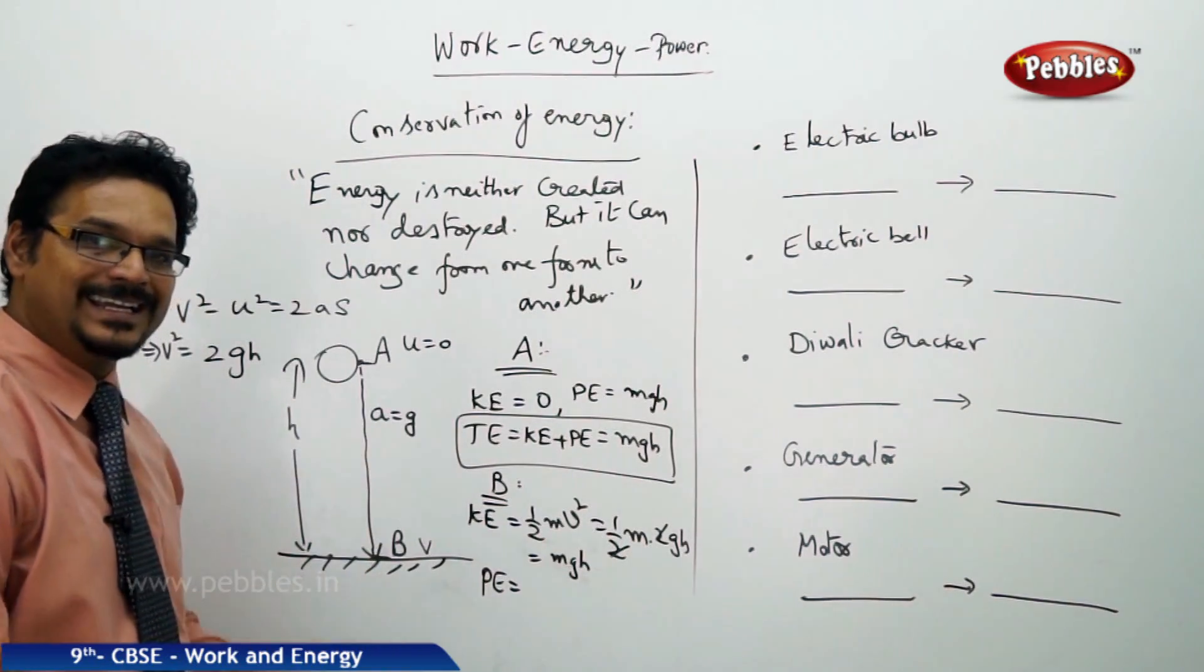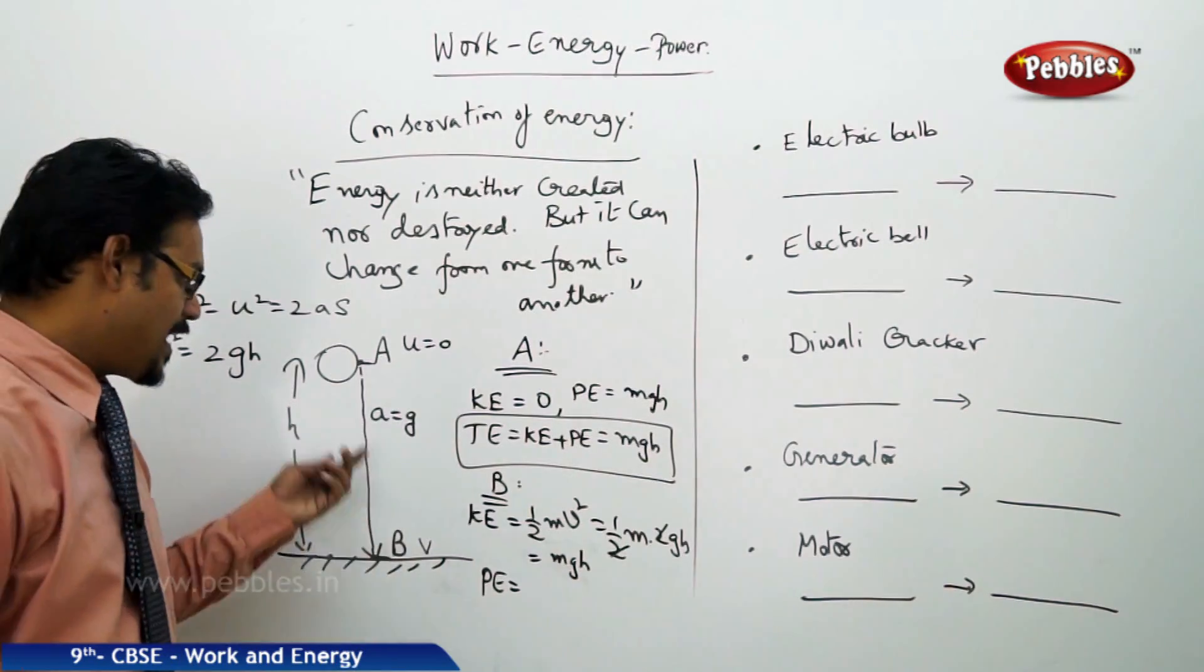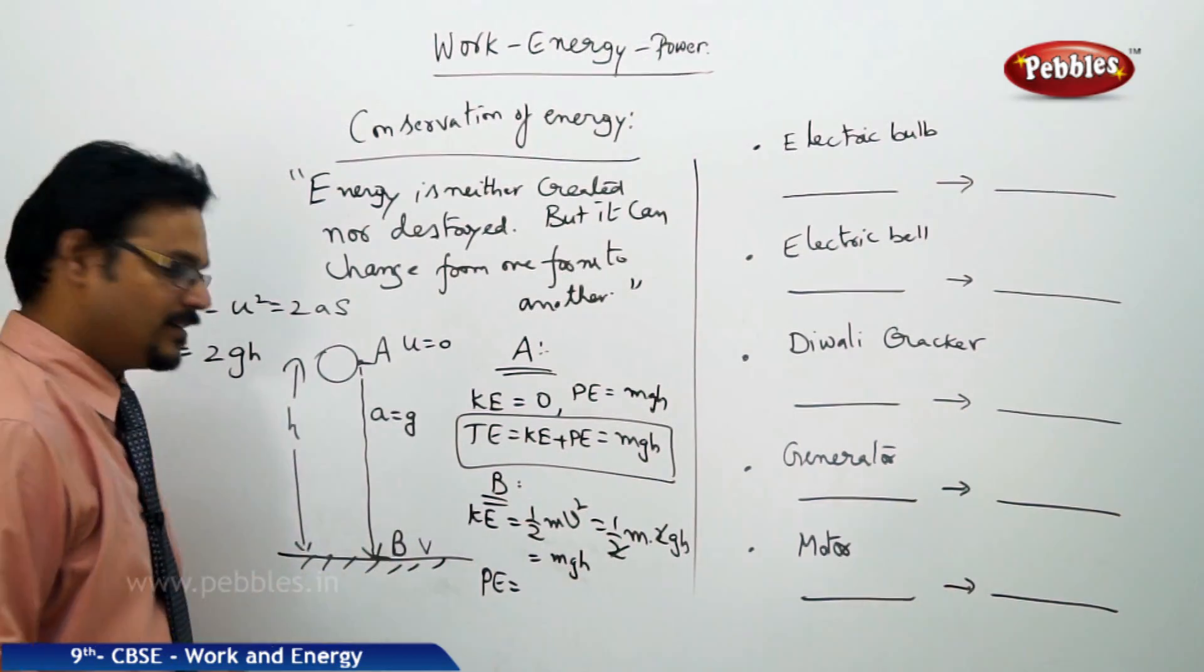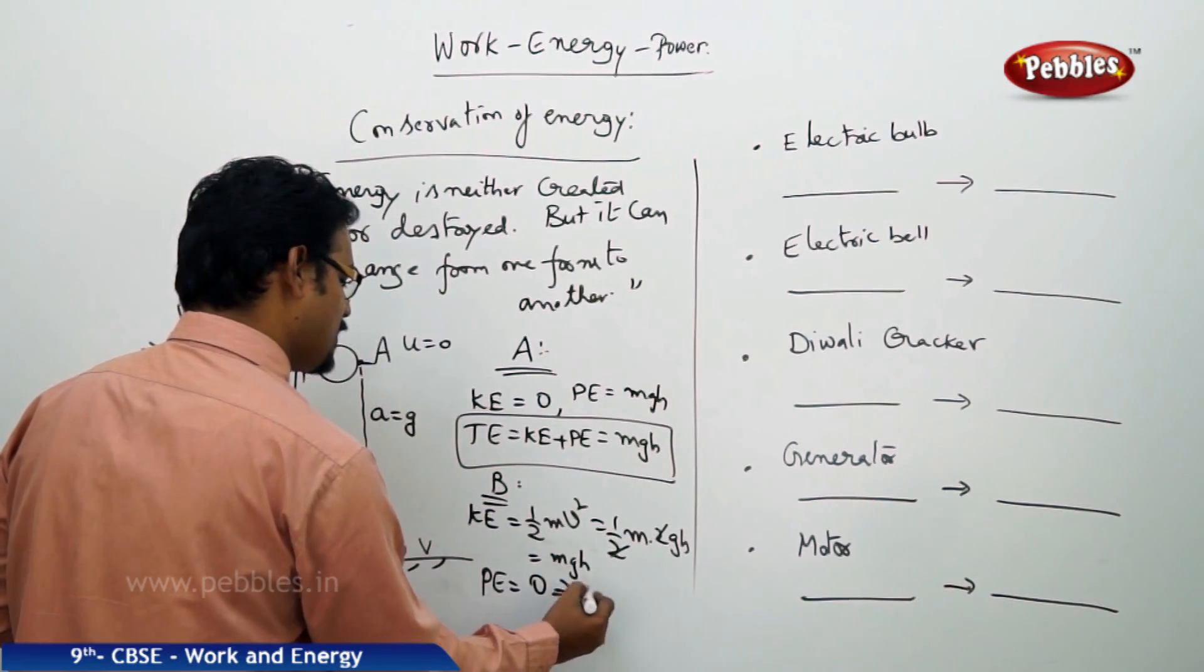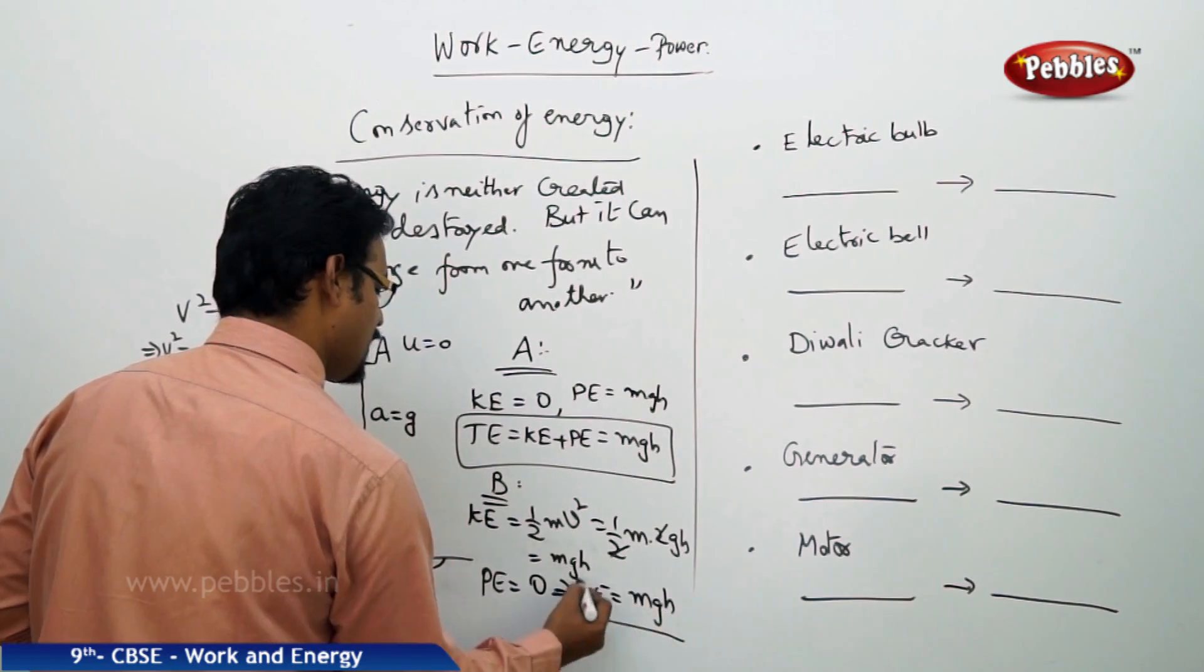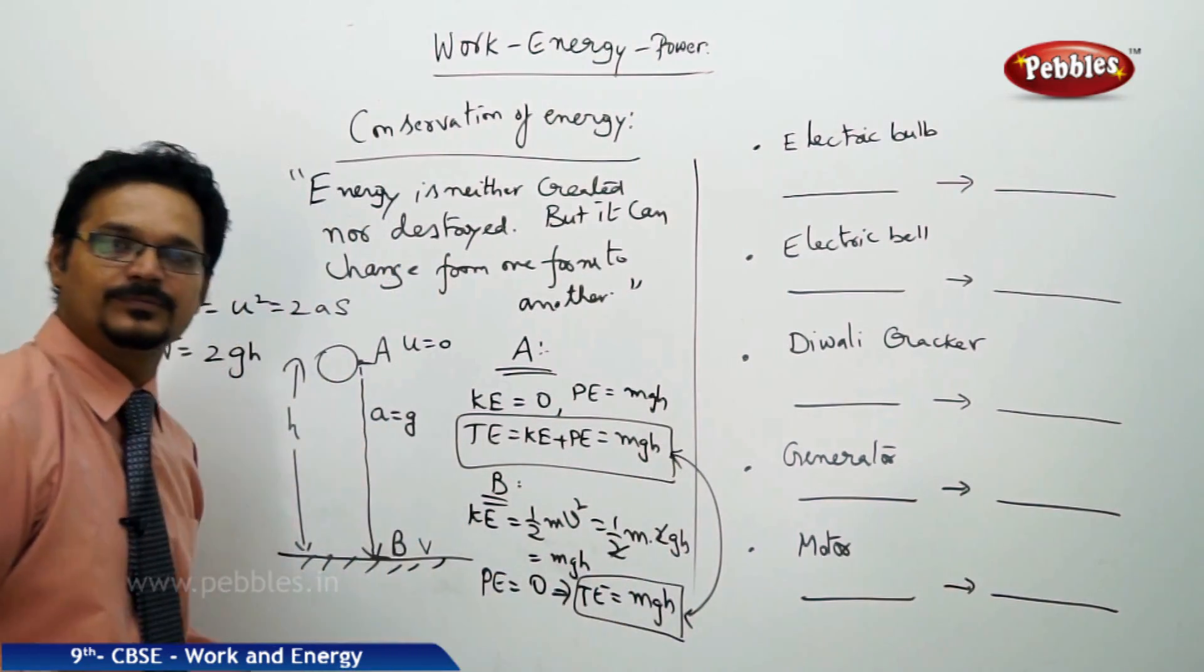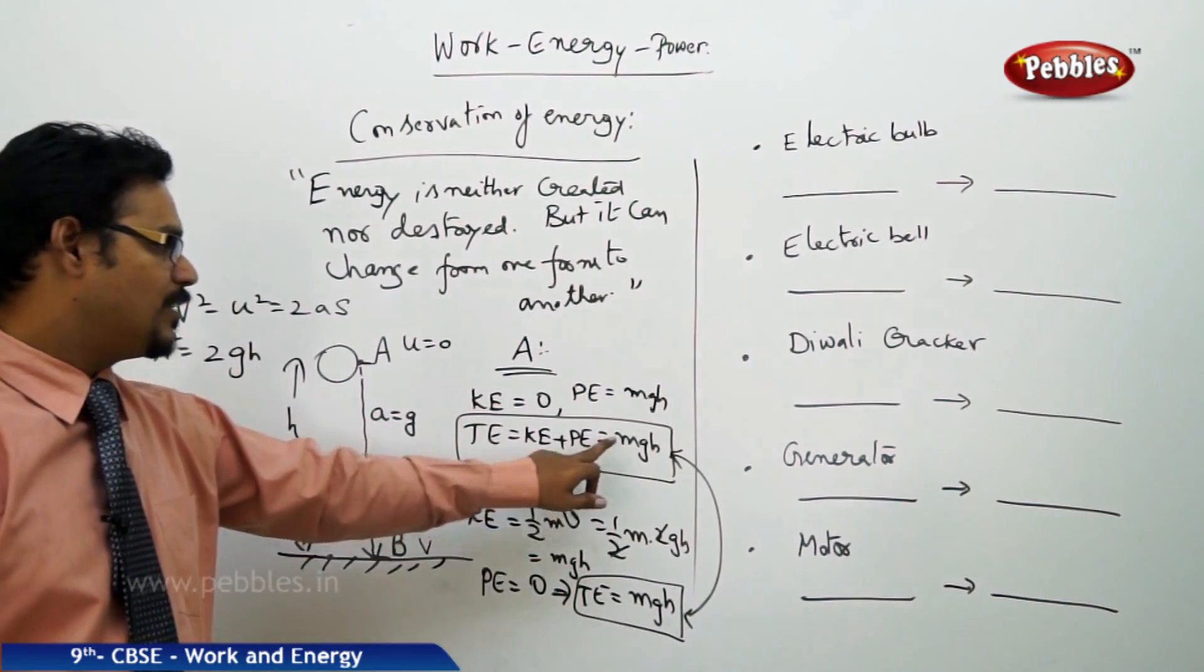Now take PE. The ball at point B has height 0 because it is on the ground. Height is measured from the ground, but as it is on the ground there is no height, so it is 0. So PE is 0. This implies the total energy is again KE + PE, which is mgh.